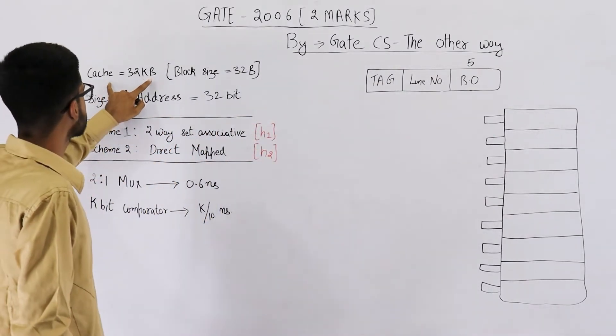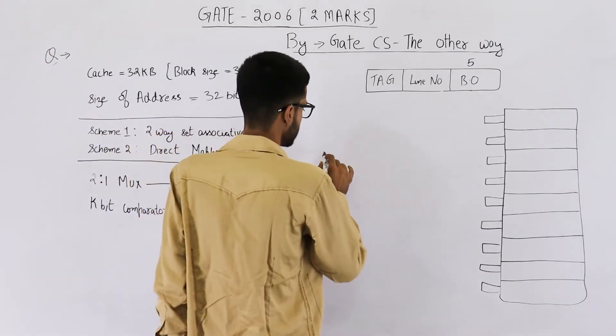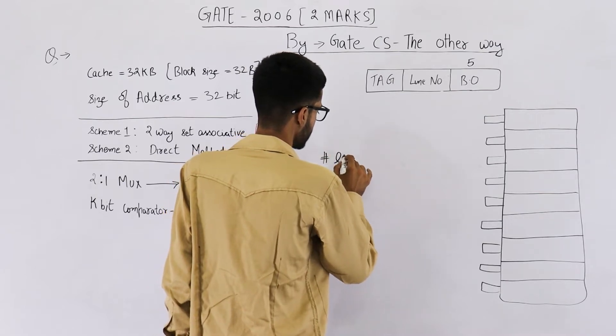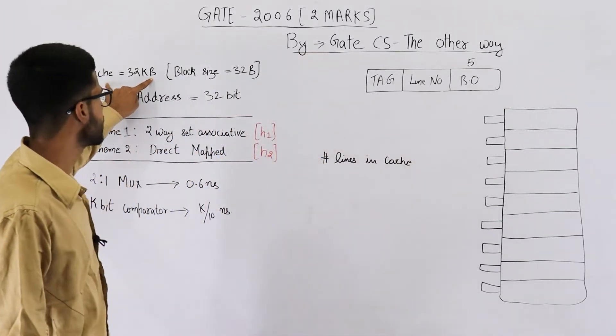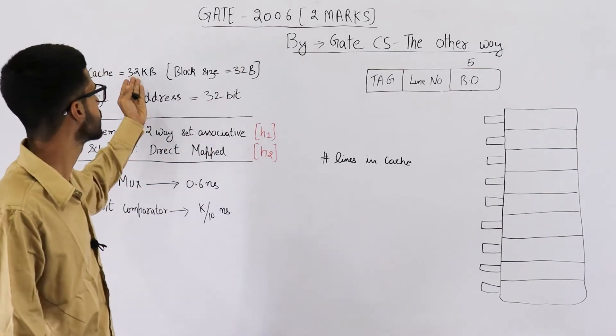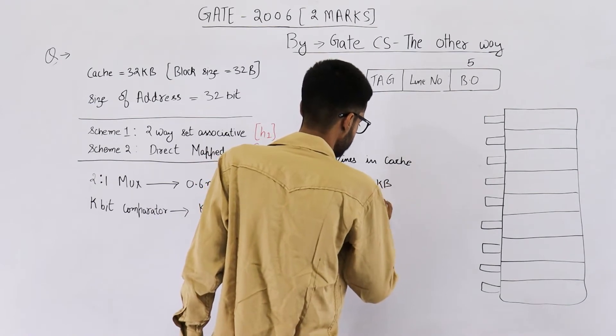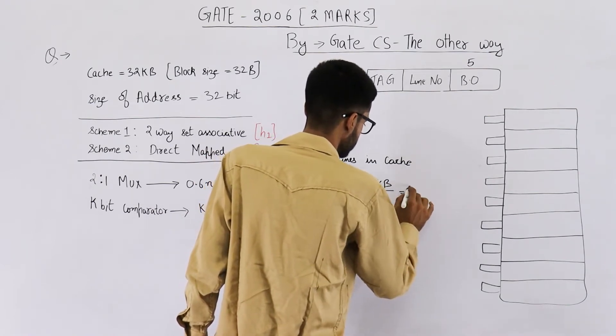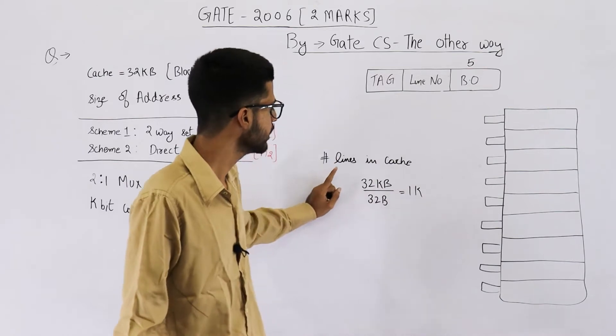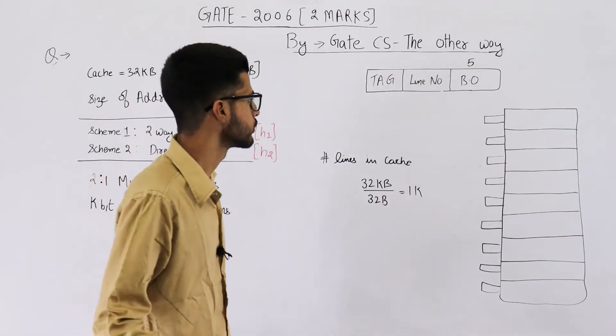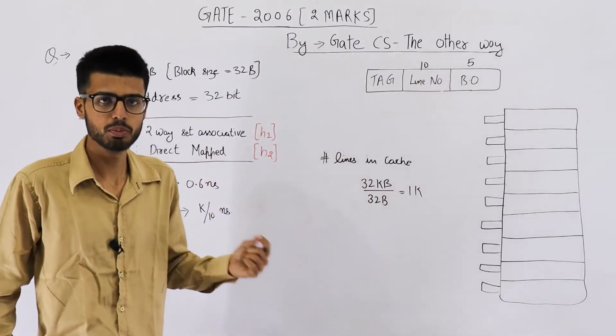Then there are 32 K bytes in cache in total. So number of lines will be number of lines in cache. It will be total size of cache by size of one line, that is 32 KB by 32 B. This comes out to be one K. That means 2 power 10. In total, we have 2 power 10 lines in cache. So line number field will be of 10 bits because log to the base 2, 2 power 10 comes out to be 10. So these are 10 bits.